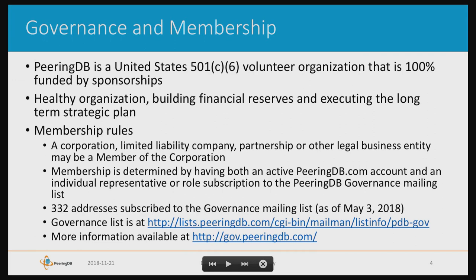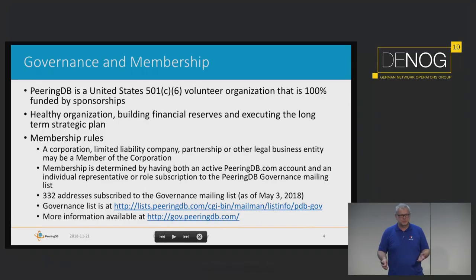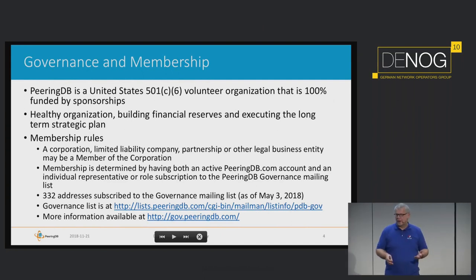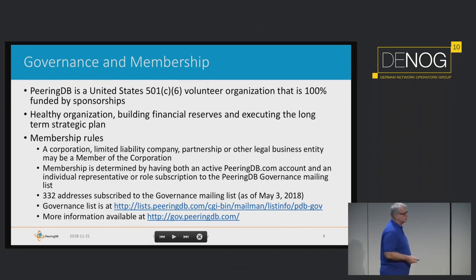There is a board — I'm also a member of the board — and we also have members. Almost everyone can become a member. You only have to have a record in PeeringDB and subscribe to the governance mailing list. Once subscribed, you are already a member: you can have a say, you can vote, you can become a director, and so on.